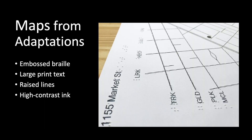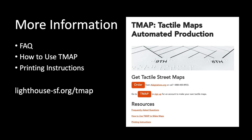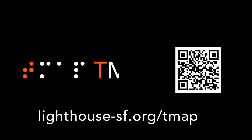Maps ordered from Adaptations include both braille, large print, raised lines, and high-contrast ink on the same page. For frequently asked questions, details on how to use TMAP, and printing instructions, scan the QR code to visit lighthouse-sf.org/tmap.